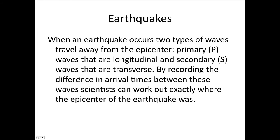Longitudinal and transverse waves are both involved in an earthquake. When an earthquake occurs, two types of waves travel away from the epicenter: the primary waves, which are longitudinal and travel the fastest, and the secondary waves, which are transverse.